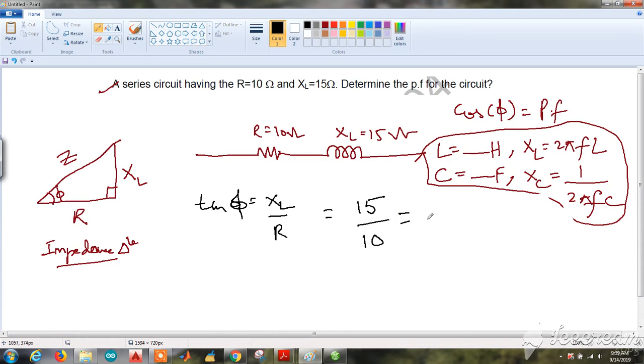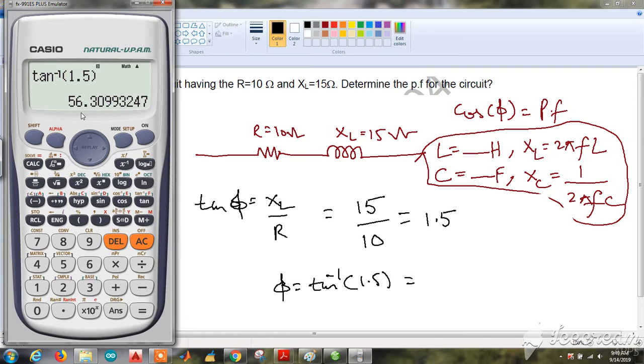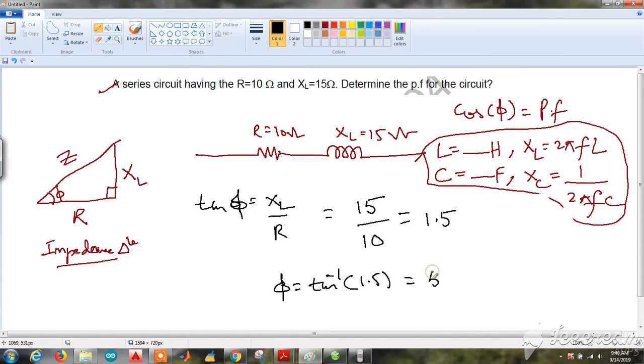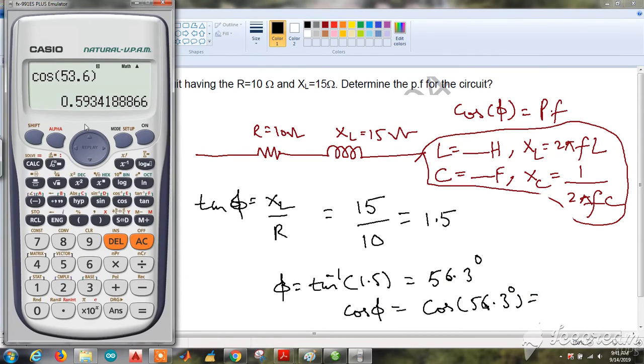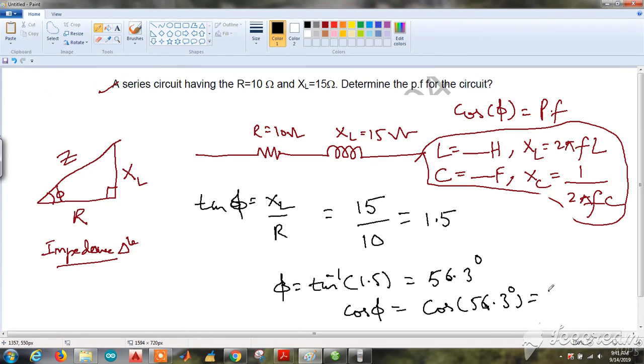Which will give us 1.5, or we can say φ = tan⁻¹(1.5), which will give us 56.3 degrees. Please make sure that your calculator is configured in degrees. So 56.3 degrees is φ. Now power factor is cos φ, that is cos(56.3°), which will give us 0.59 or approximately 0.6.